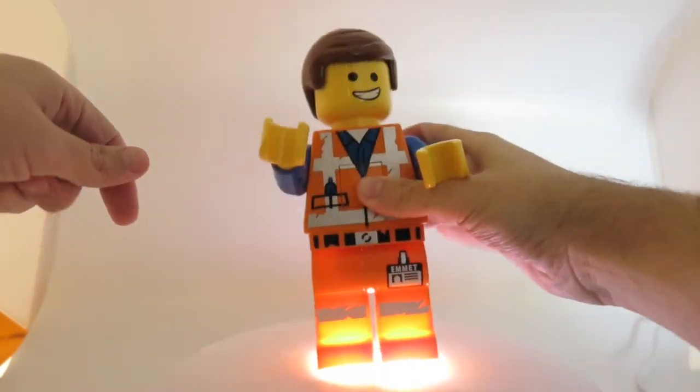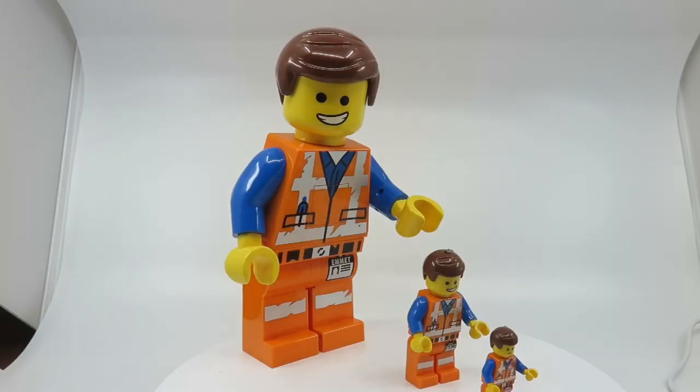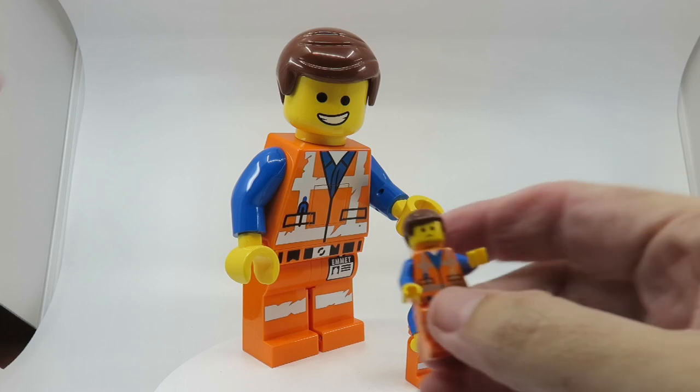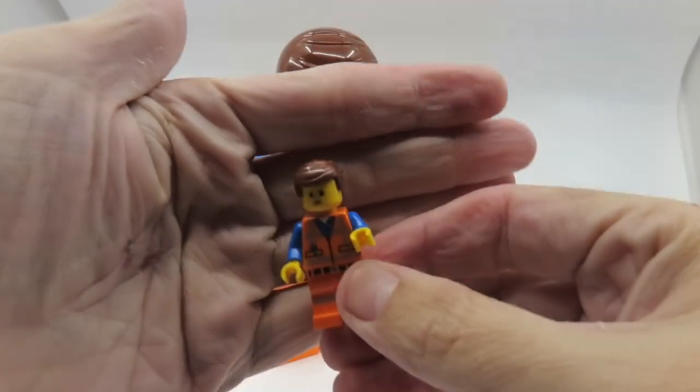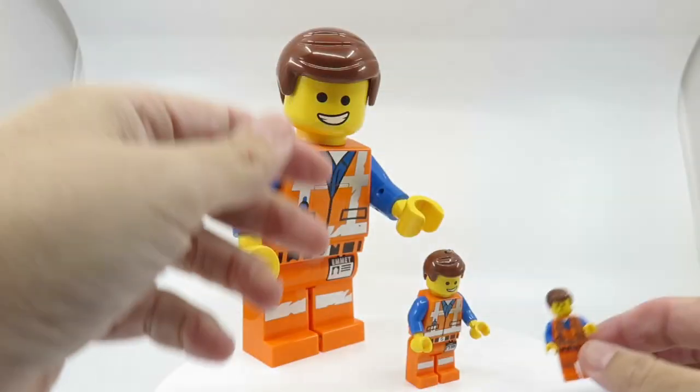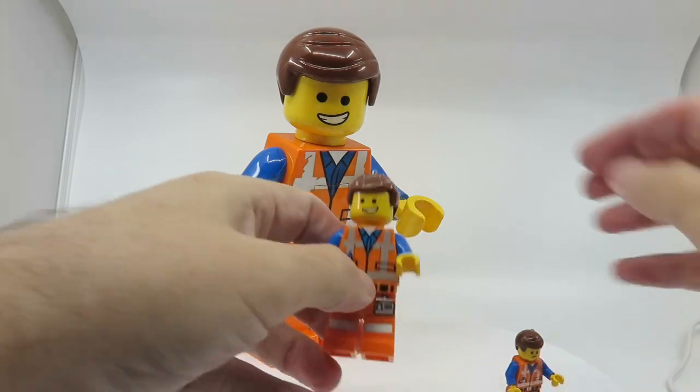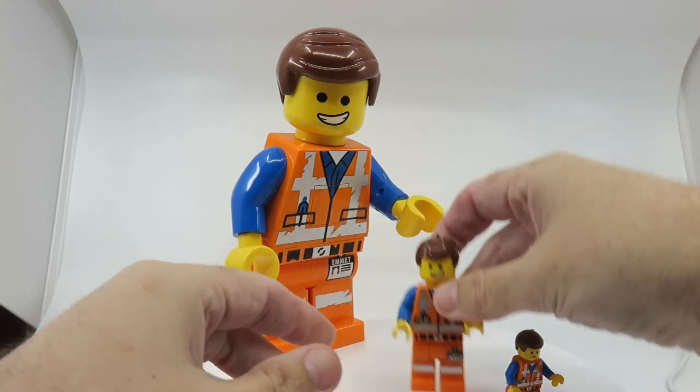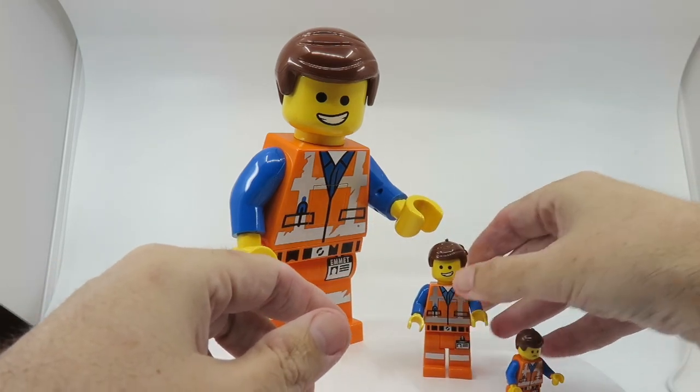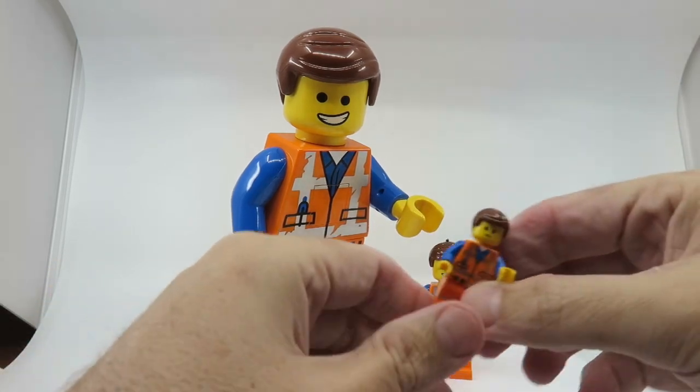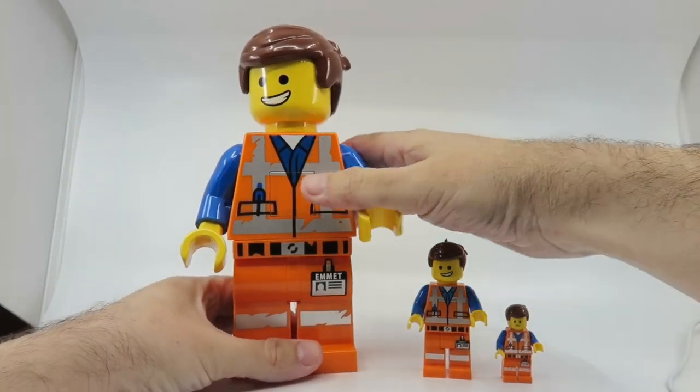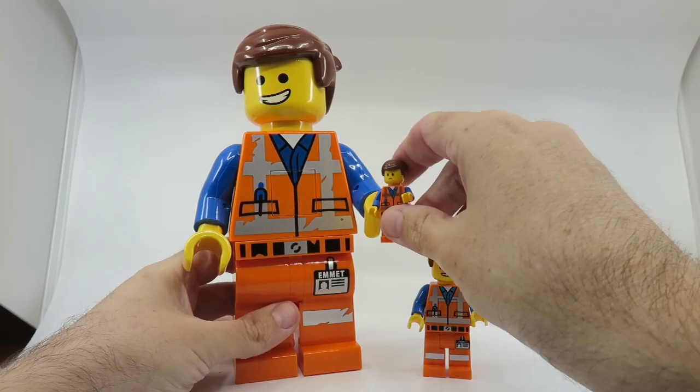So that is Emmet, and just for a size comparison, this is obviously the new torch. The smaller one is a keychain torch, which has had the top snipped off, and there's obviously the standard minifigure for Emmet. Each of them is quite bigger than the next, but I really do like this large scale. They look amazing on the shelf, and I'll be displaying it mainly as a minifigure and not using it as an actual torch.